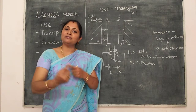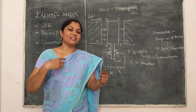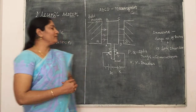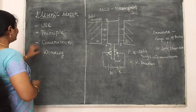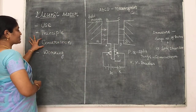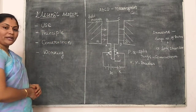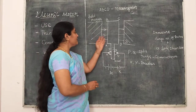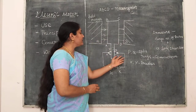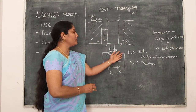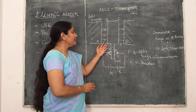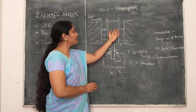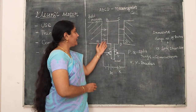Using this force, we can produce a rotational effect in a rectangular coil. Now let us explain the construction. We should remember all the parts of electric motor. It contains a rectangular coil A, B, C, D.